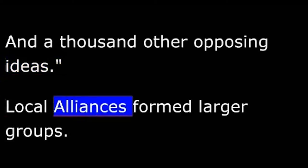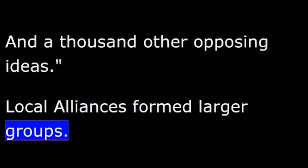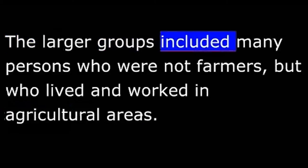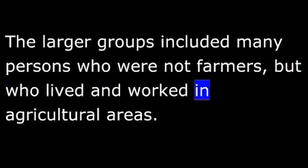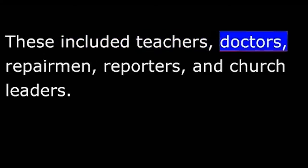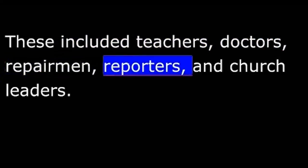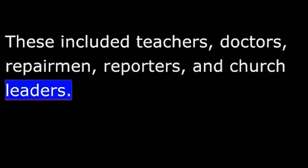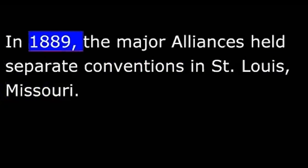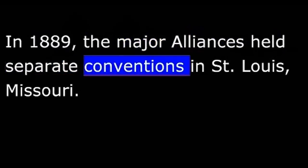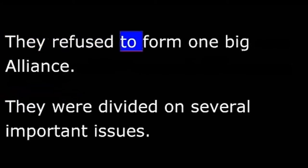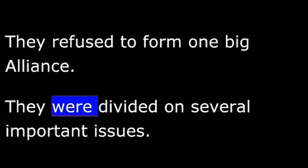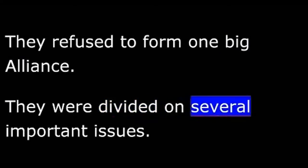Local alliances formed larger groups. The larger groups included many persons who were not farmers, but who lived and worked in agricultural areas. These included teachers, doctors, repairmen, reporters, and church leaders. In 1889, the major alliances held separate conventions in St. Louis, Missouri. They refused to form one big alliance. They were divided on several important issues.